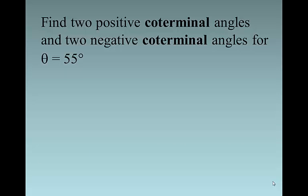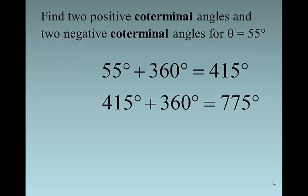Here's our first problem of the semester. Find two positive coterminal angles and two negative coterminal angles for theta equal 55 degrees. All of our angles start in standard position, so the initial side is along the positive x-axis. The terminal side here is going to be at 55 degrees.